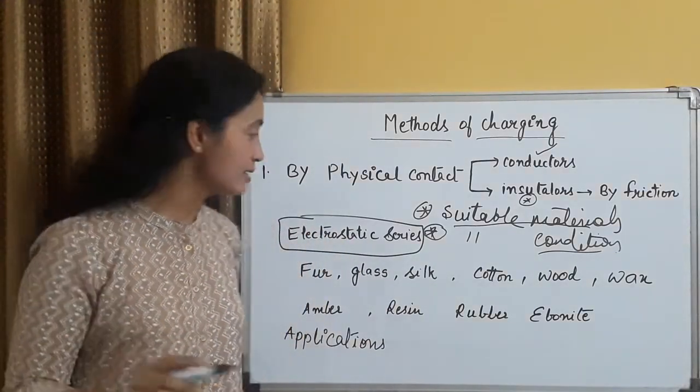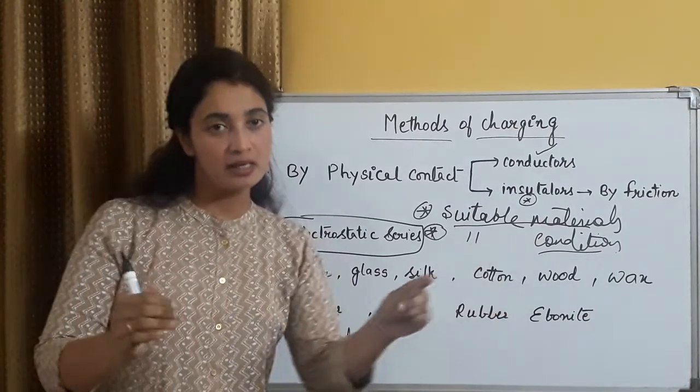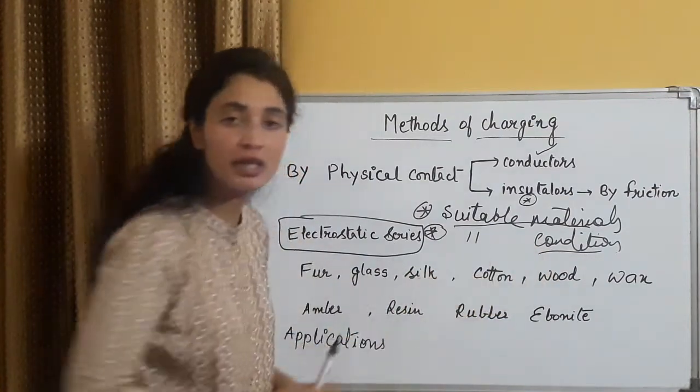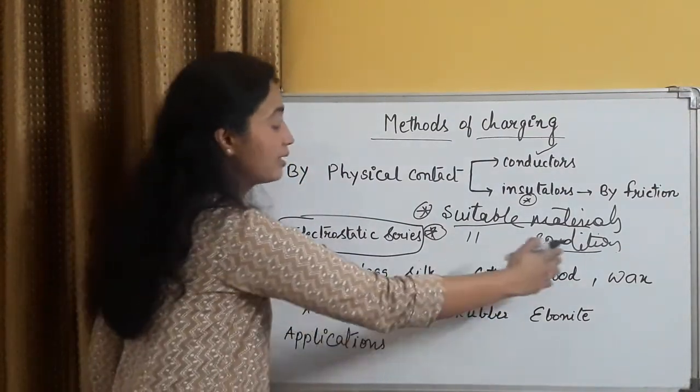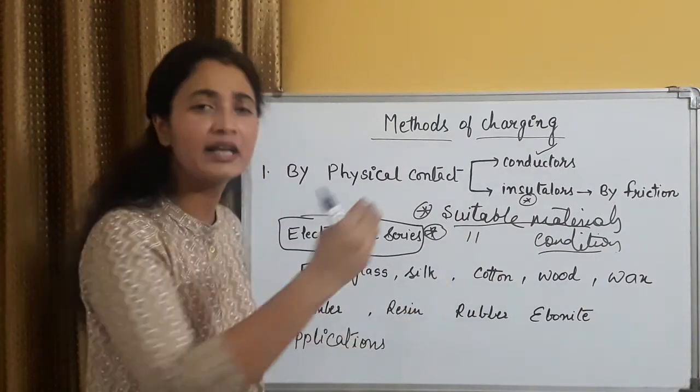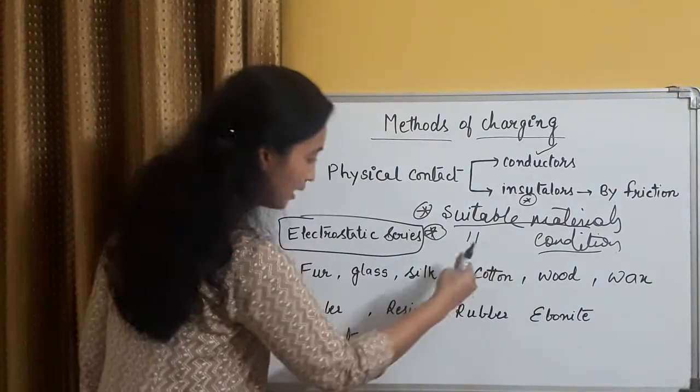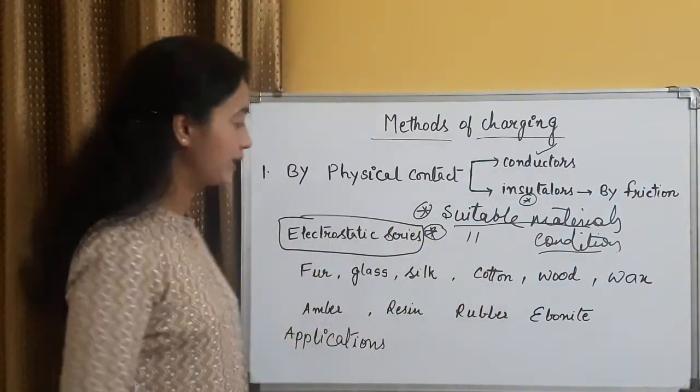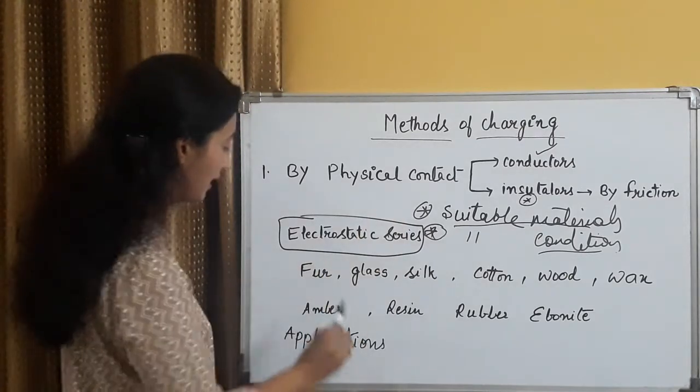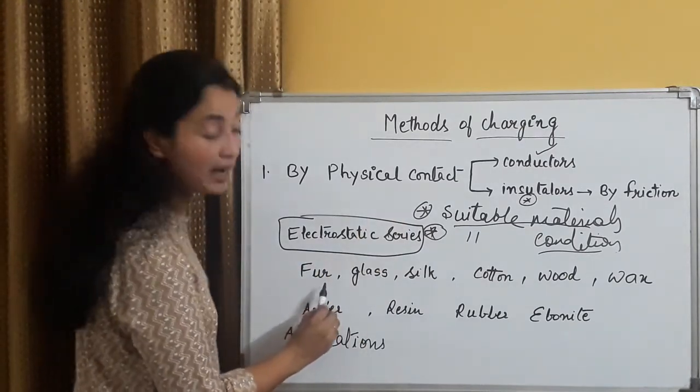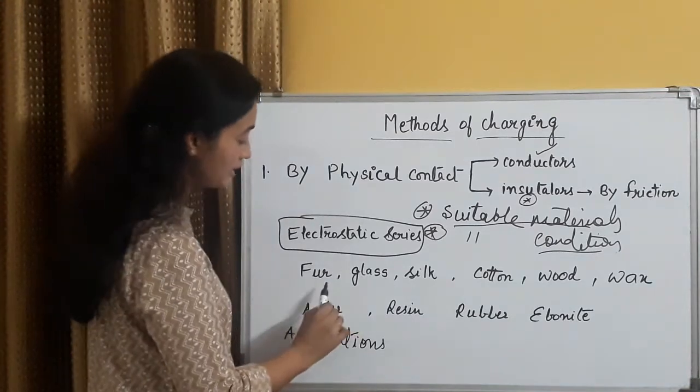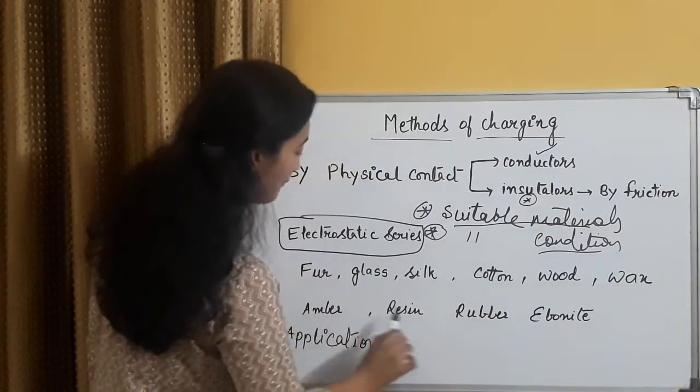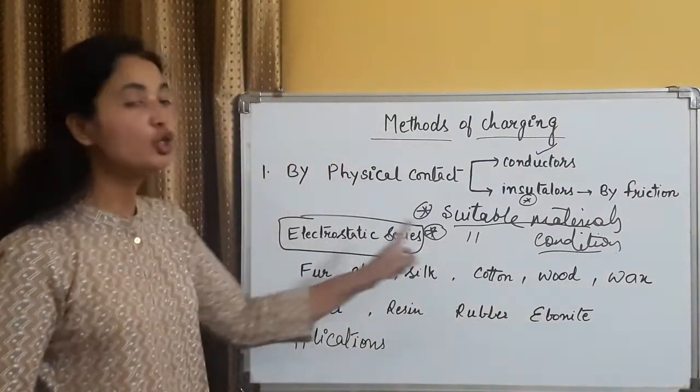Kuch materials aur suitable conditions ke andar, agar hum do insulators ko rub karte hai, to at the point of contact, locally, charges are transferred. Locally, abhi charging by friction ke andar, humne kaha suitable material hona chahiye, suitable conditions, ek electrostatic series. Electrostatic series, ek rough type of series, based on experiments. Experiment kar karke, inko is tarah se arrange kiya gaya hai, lekin zaroori nahi ki jo materials arrange kiya gaya hai, inke beech mein aur bhi kuch materials like human body bhi aa sakta hai, ya yahan par, aur sulfur ko bhi laa sakte hai, resin ko bhi laa sakte hai.